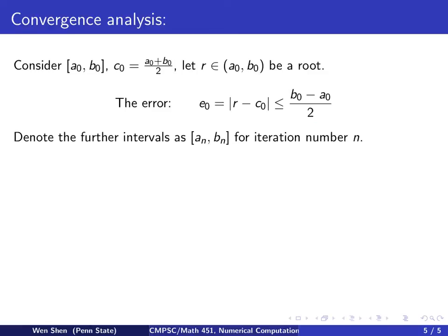Now we will denote the interval as [an, bn] for iteration number n. For the error at iteration number n, it will equal to |r - cn|, which is the midpoint always. The error estimate for this distance will be, again, by the same reason, half of the length of the interval, that's (bn - an)/2. We know that the bisection method, after each iteration, the interval length becomes half of the previous one. So a simple induction will show you that this amount here, if you change it into b0 - a0, the initial interval, then you have to divide it by 2^n. So joining together with the 2 here, you get 2^(n+1). And you can write it in terms of the error e0, which is here, so this will be e0/2^n.